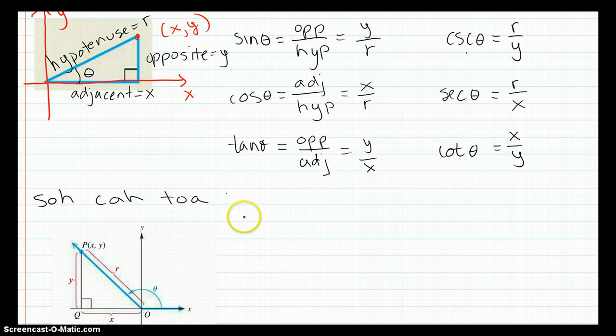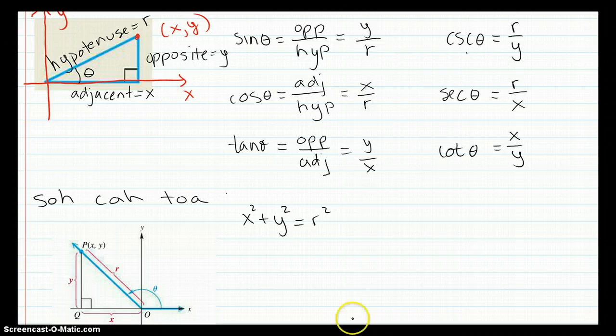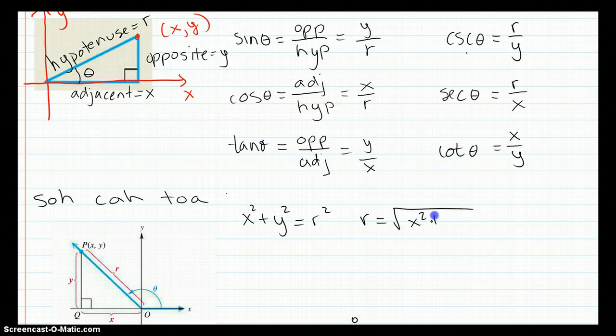And by the way, r, the definition of r, how it relates, as we know from the Pythagorean theorem, x squared plus y squared equals r squared. Or r is the square root of x squared plus y squared. You don't have to worry about the plus or minus. In this case, r is always going to be positive only. So that is the definition.